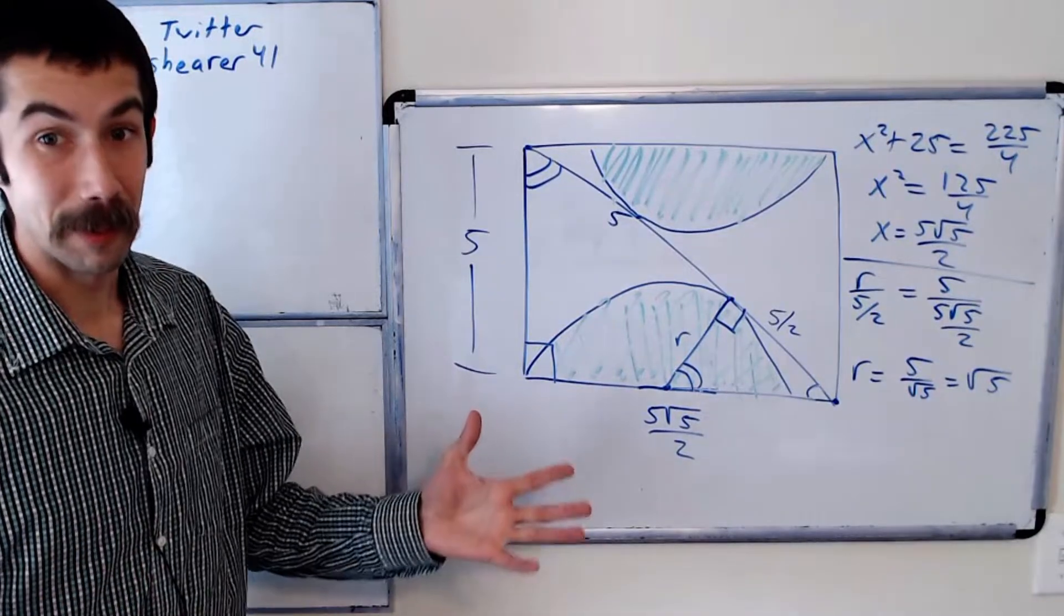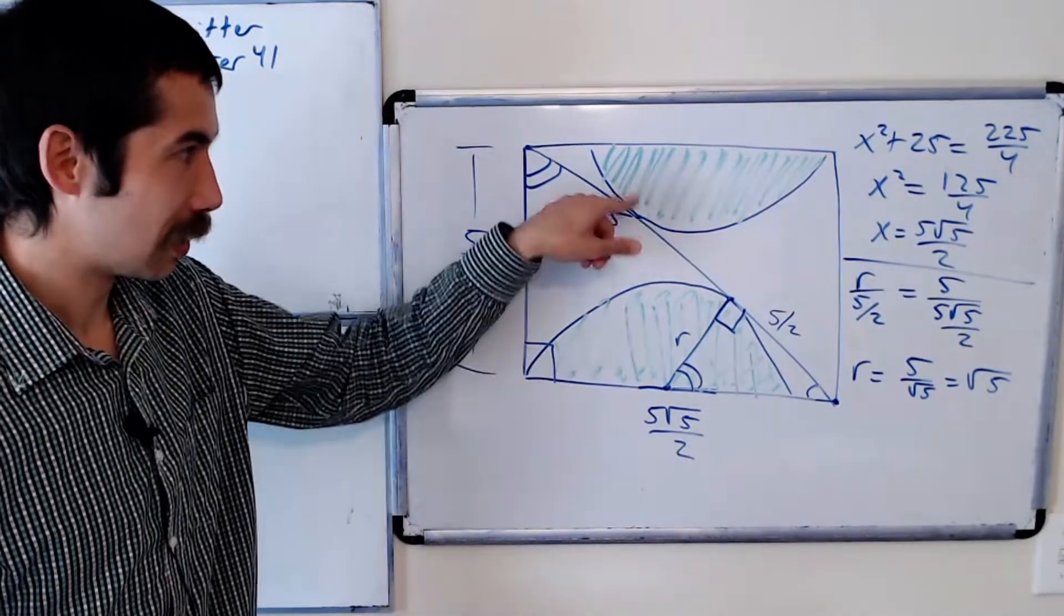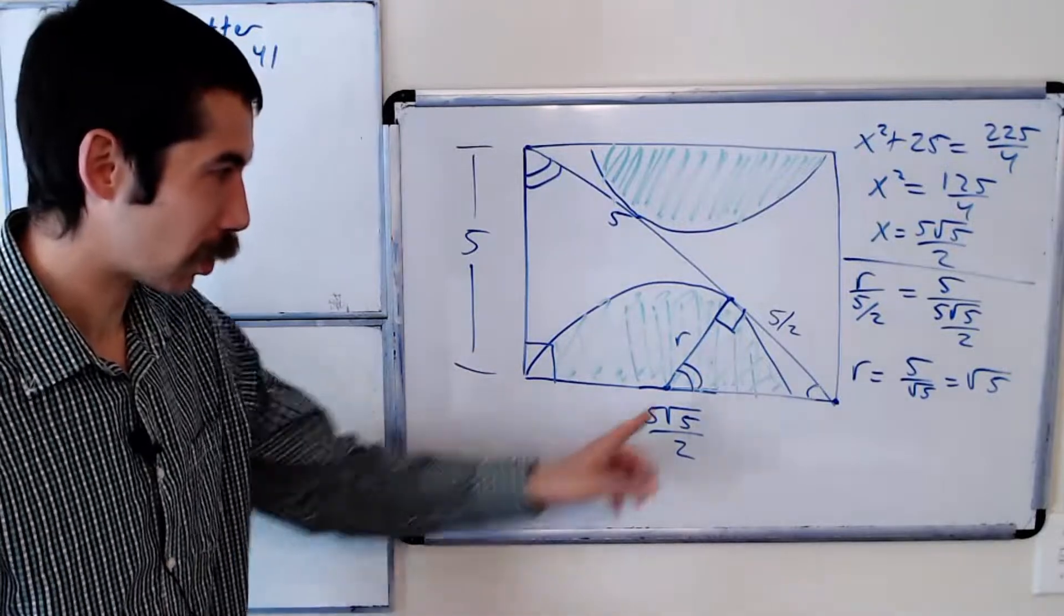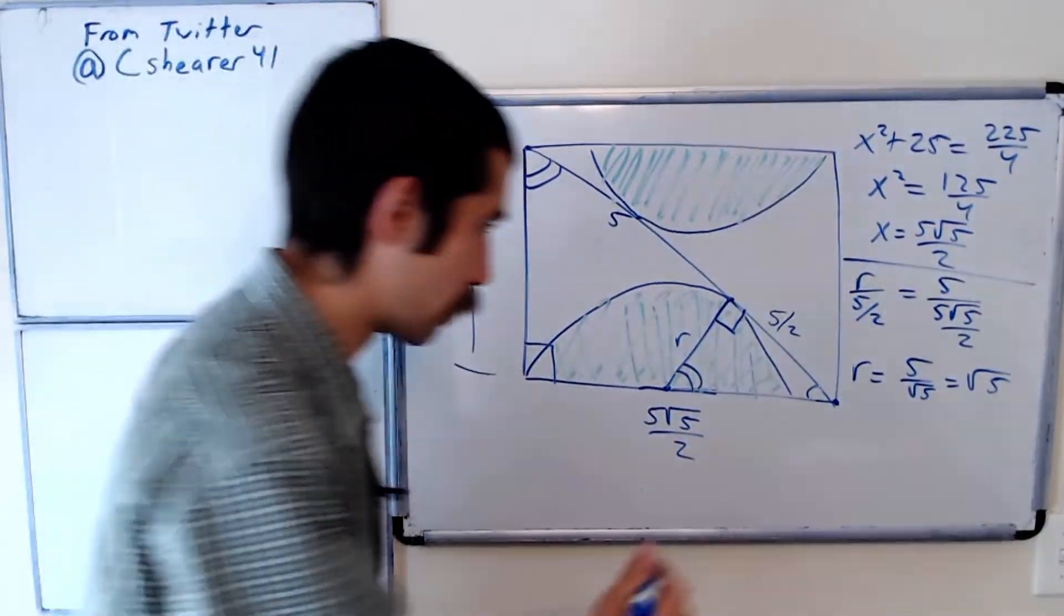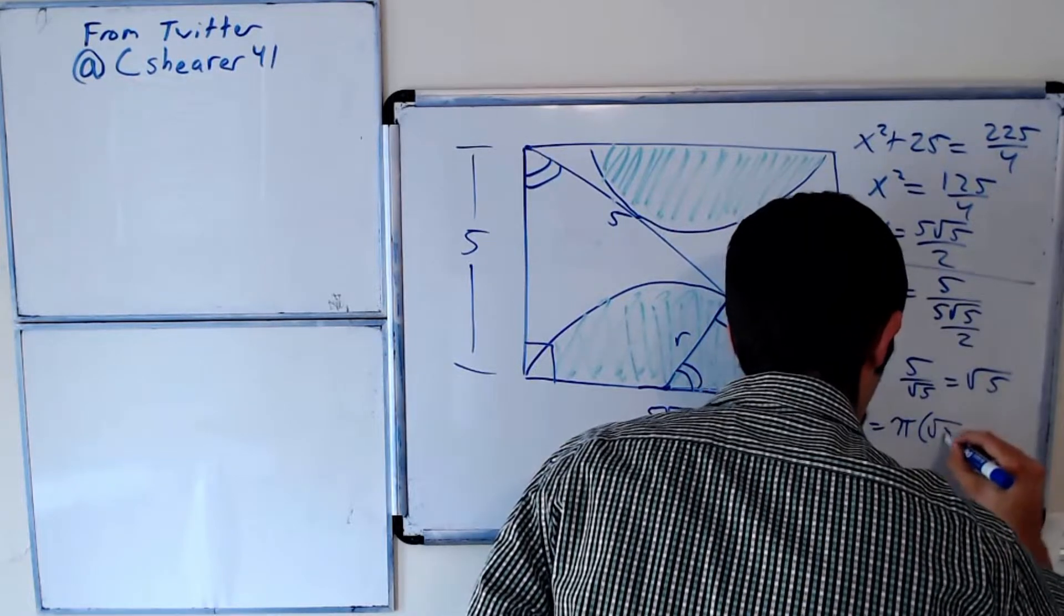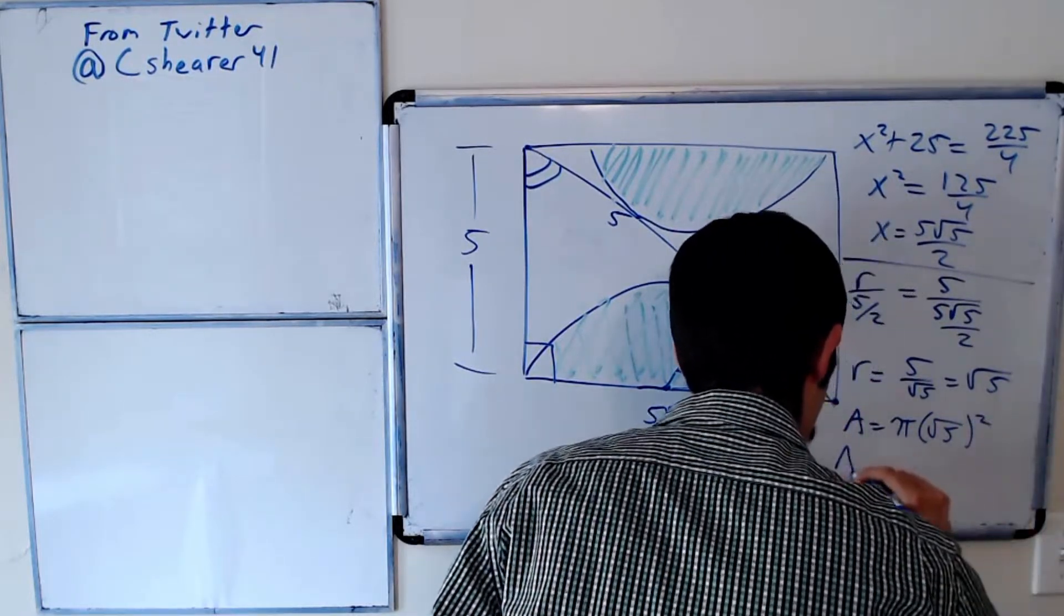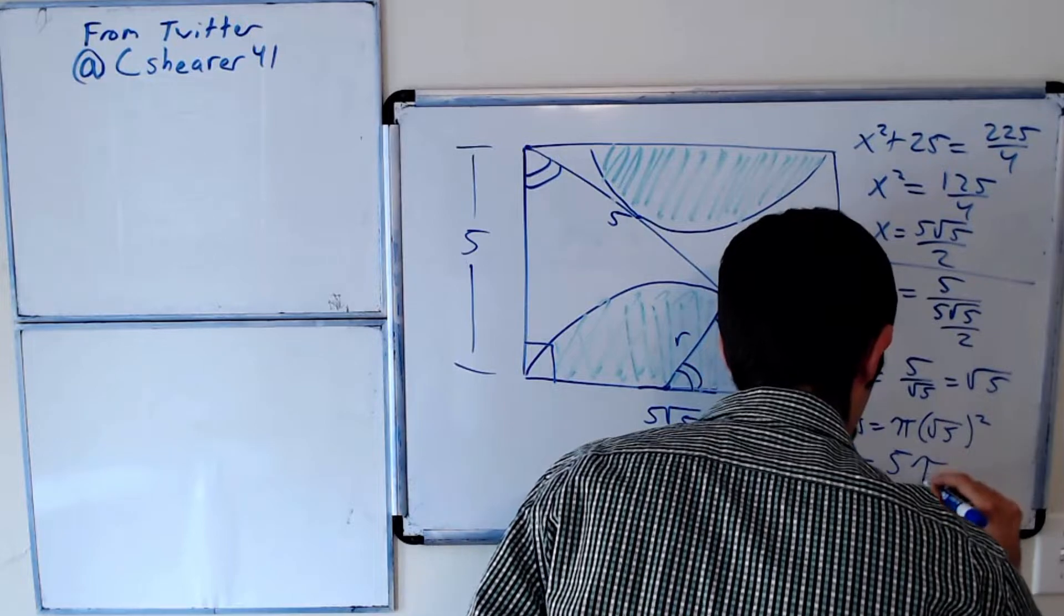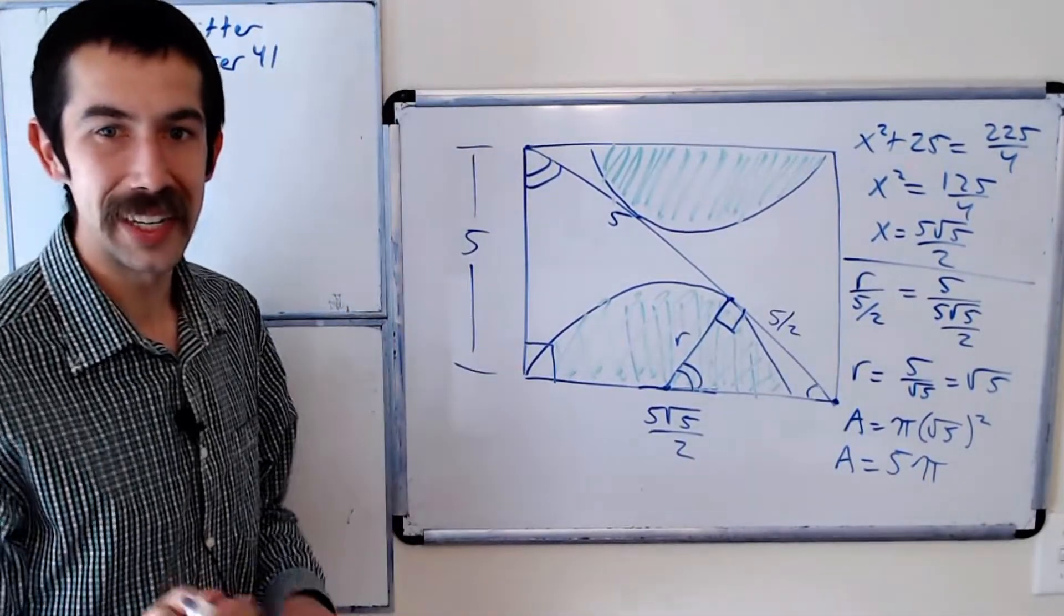So we're basically done, right? The area of the green region, so the area of the circle with radius root 5 is equal to pi root 5 squared, and so our area is 5 pi. Pretty neat.